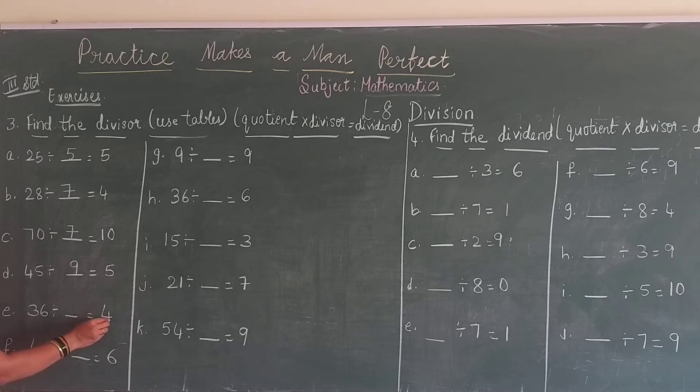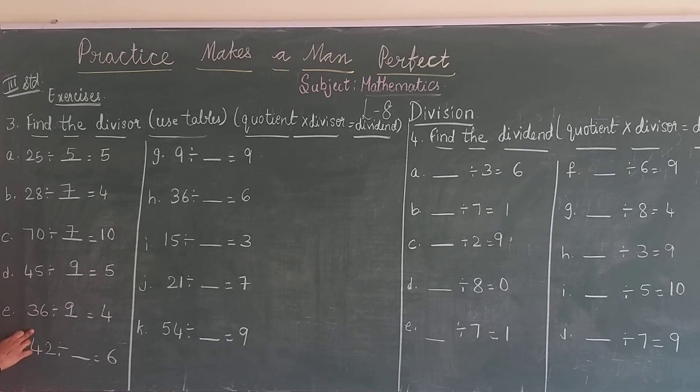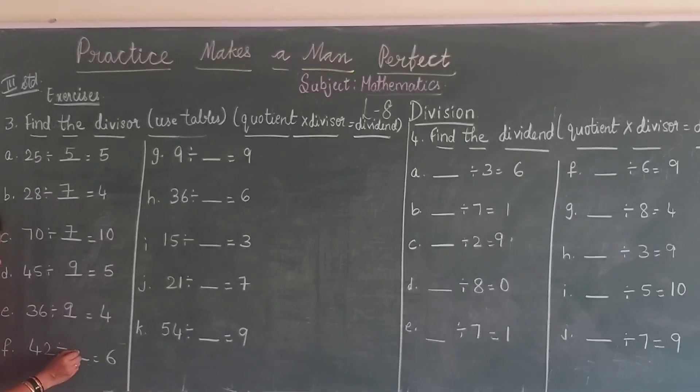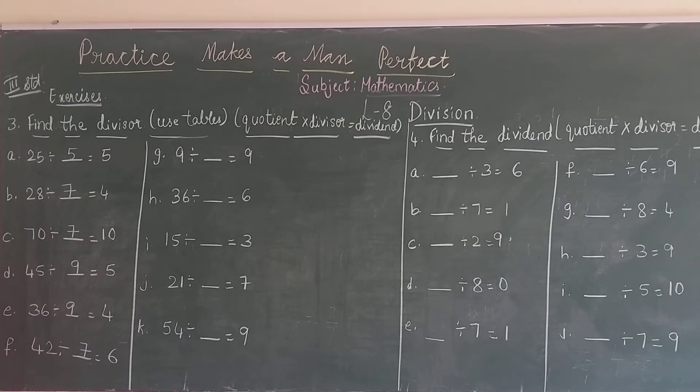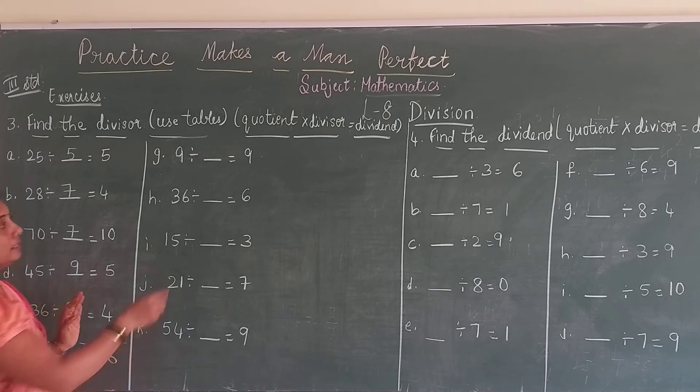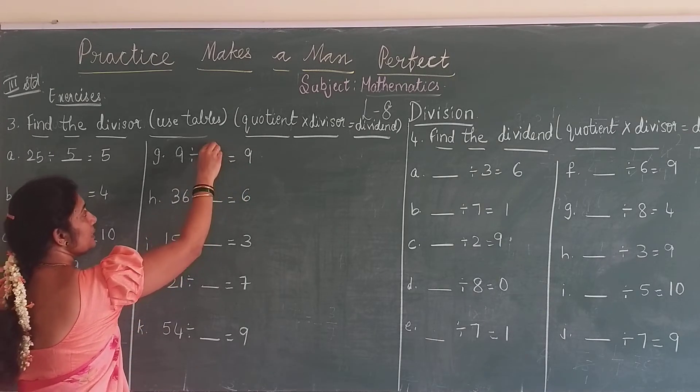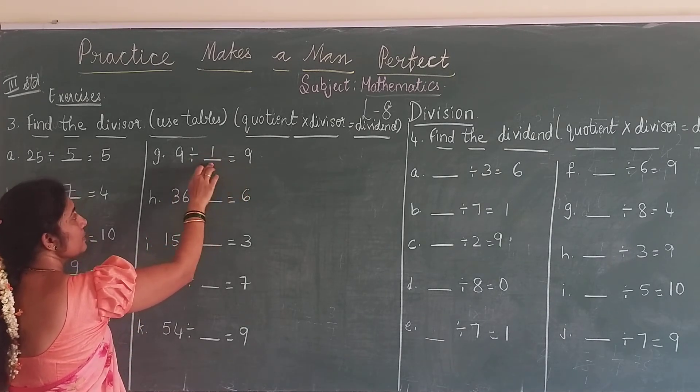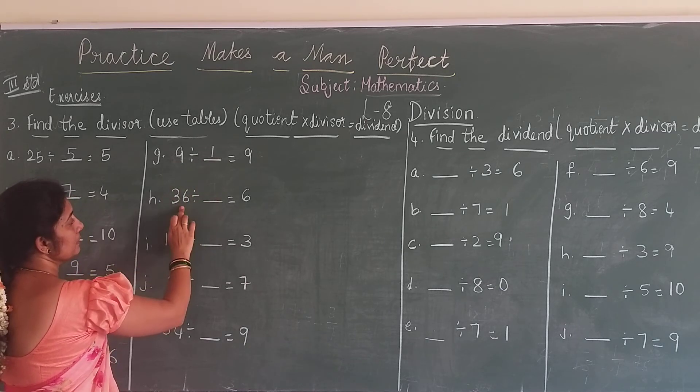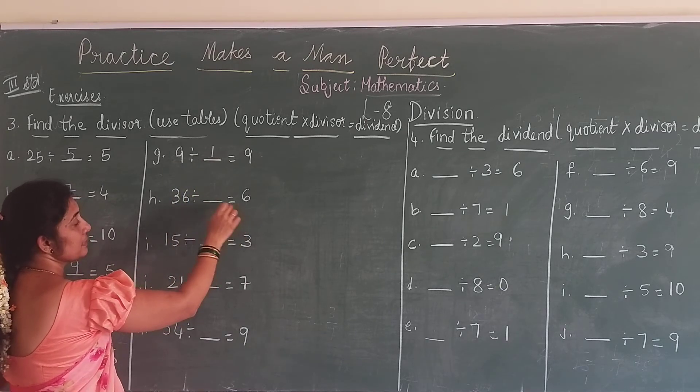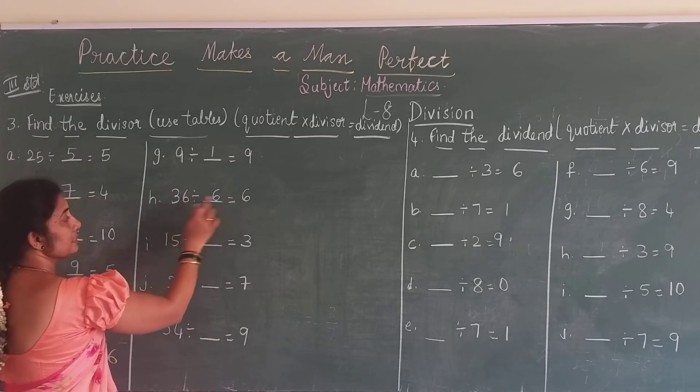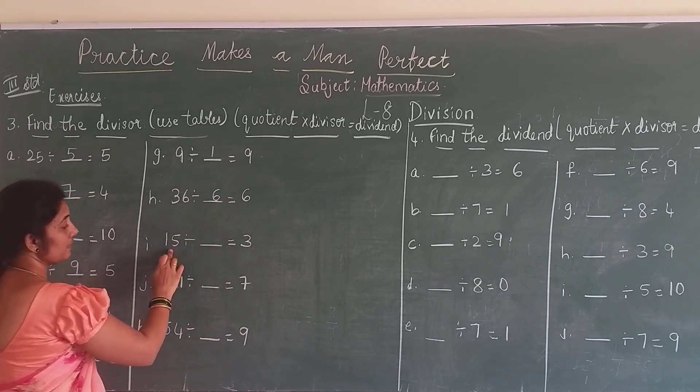Again here, 4 nines are 36, 6 sixes are 36, 6 sevens are 42. Here, same 9 and 9 is same, so it is 1. When both are same, 9 ones are 9. 36 divided by 6, 6 sixes are 36. Here 15, 3.